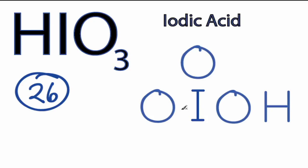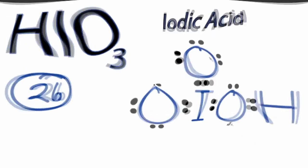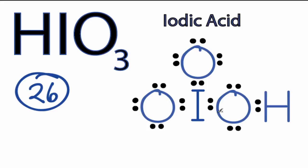We'll start out, we'll put two electrons between atoms to form the chemical bonds, and then we'll go around the outside of the other atoms to complete their octets. So we've used 2, 4, 6, 8, and we'll go 10 and 24. So we've got two more, and we'll just put them right here on the iodine. So we've used all 26 valence electrons. Each of the atoms has 8, the hydrogen has 2, so all the outer shells are full, so this is a valid Lewis structure for HIO3.